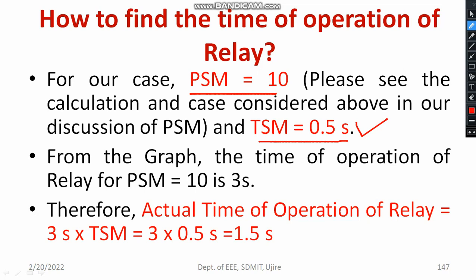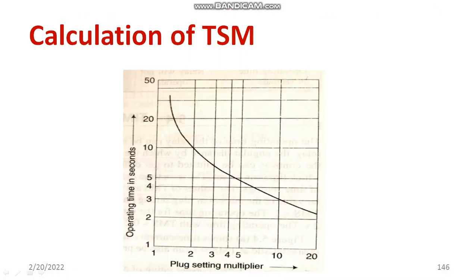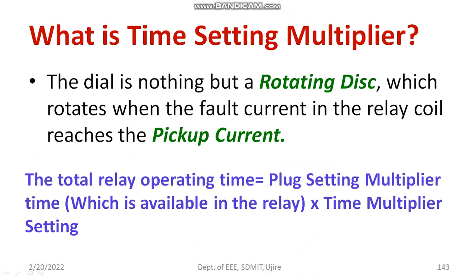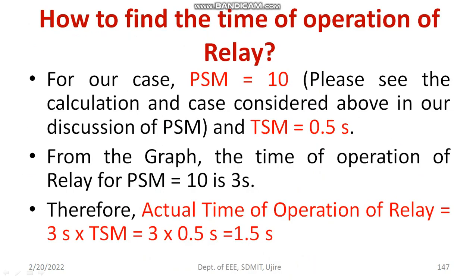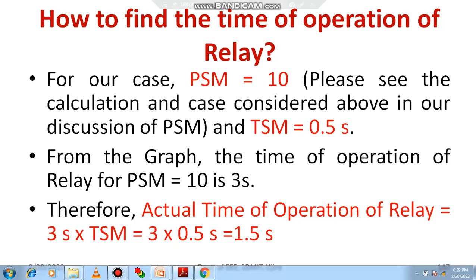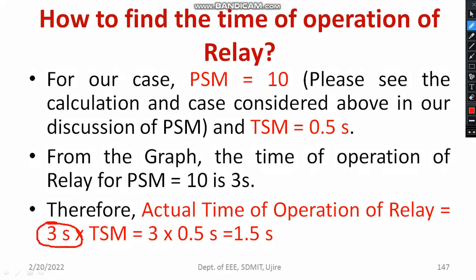Therefore, my ultimate goal is to compute the actual operating time. The actual operating time equals plug setting multiplier time multiplied by time setting multiplier. The PSM time from the graph is 3 seconds, and TSM is 0.5, which is my set choice, adjustable using the dial. Multiplying both: actual operating time equals 3 × 0.5 equals 1.5 seconds. This is the way to solve the problem.